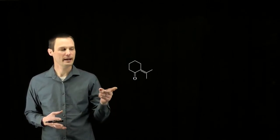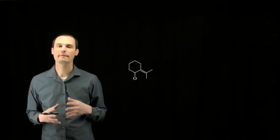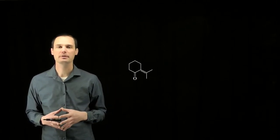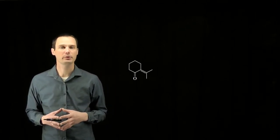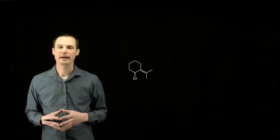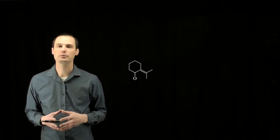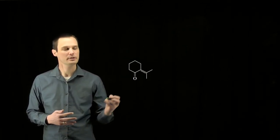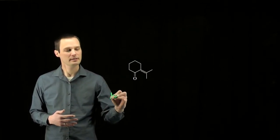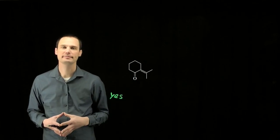Here we have oxygen, carbon, carbon, and carbon — four atoms that all have p-orbitals, all adjacent to each other. So this molecule does have at least three or more atoms with consecutive p-orbitals. Yes, this molecule is conjugated.